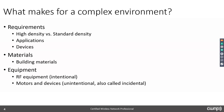What makes for a complex environment? There are three things that can drive complexity. First, there is the set of requirements related to the wireless LAN that you're designing or deploying. Then there are the materials within the facility, and then the equipment that is used within that space. If you have high density versus standard density, you have very different requirements. With high density, we need to accommodate many more devices in the same amount of space than we would with standard density.